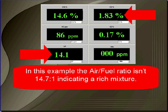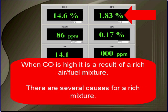In this example, the air fuel ratio is not 14.7:1 — it's indicating a rich mixture. When CO is high, it's the result of a rich mixture. There are several causes for rich mixtures.